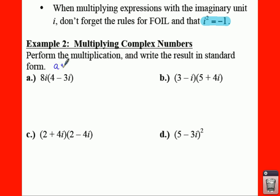If you multiply 8i times 4, that gives you 32i. 8i times negative 3i gives you negative 24i squared. So this is not in standard form yet because you have this beautiful i squared.